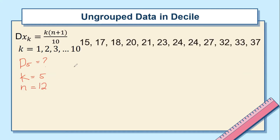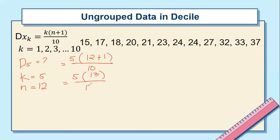Once we identify K and N, substitute into the formula. So we have 5 times the quantity (12 plus 1) all over 10, which equals 5 times 13 over 10, giving us 65 over 10. Dividing, we get 6.5 term.